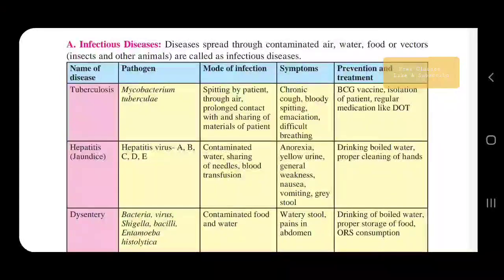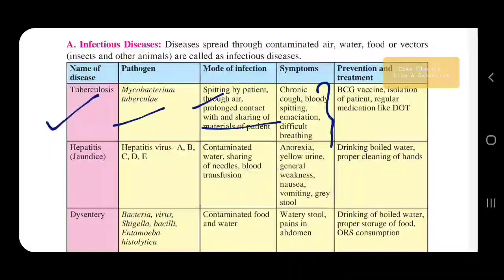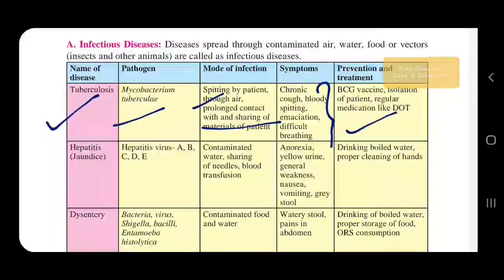First we will see tuberculosis. Mycobacterium tuberculosis is the pathogen. Mode of infection includes spitting by the patient through air and prolonged contact with the person. Symptoms include chronic cough, bloody spitting, emaciation, and difficulty in breathing. Treatment includes the BCG vaccine. You can also isolate the patient — maintaining distance from patients will prevent the disease from spreading.